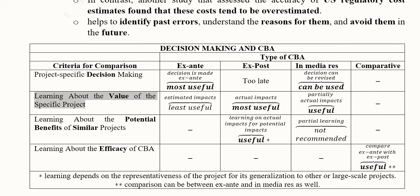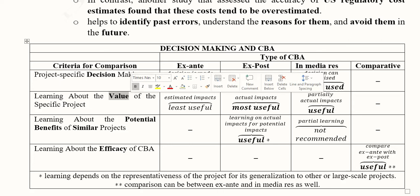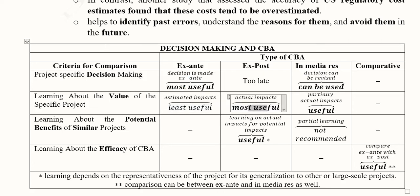The second criterion is learning about the value of a specific project. Ex-post analysis is most useful here because it provides actual impacts once the project is completed. Ex-ante analysis only provides estimated impacts. In Medias Res gives partially actual impacts and is also useful. Comparative CBA is not of much relevance for this criterion.